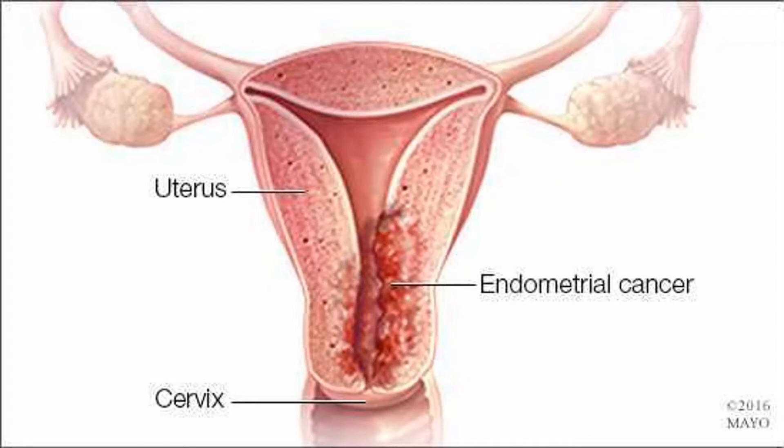An illustration shows the female reproductive organs, including the locations of the uterine cavity, endometrium, myometrium, serosa, fallopian tubes, ovaries, body of the uterus, endocervix, exocervix, cervix, and vagina.